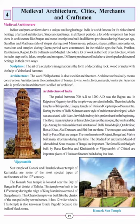The mosques and canals built by Firoz Shah are unique. The Muslim rulers of Gujarat, Bengal and Malwa built many structures, including the Badra Fort and Jama Masjid of Ahmedabad and Sona Mosque of Bengal. The fort of Kumbhalgarh built by Rana Kumbha and Kirti Stambh or Vijay Stambh of Chittor are important pieces of Hindu architecture built during the Delhi Sultanate period.